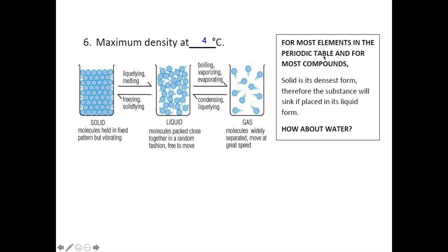For most elements in the periodic table and for most compounds, solid is its densest form. In gaseous form, molecules are moving very fast and are located far apart from each other. As the temperature decreases, the molecules begin to lose energy, move slower, and become closer to each other. As the temperature drops further, the molecules become so close that they are tightly packed and become solid. Due to this closely packed arrangement, the substance is at its densest form — meaning if you place the solid version of a substance into the liquid version, the solid will sink.